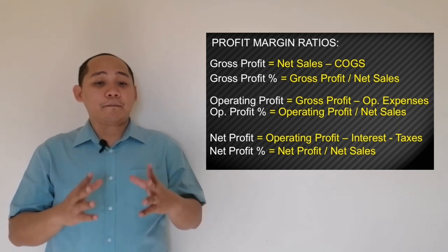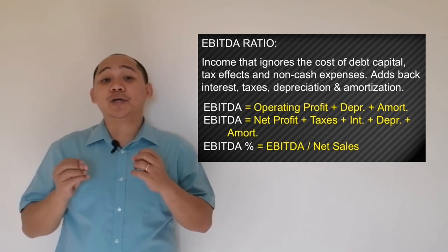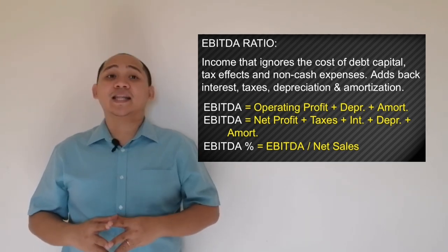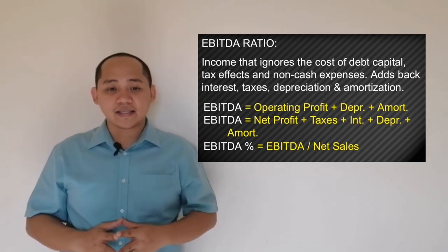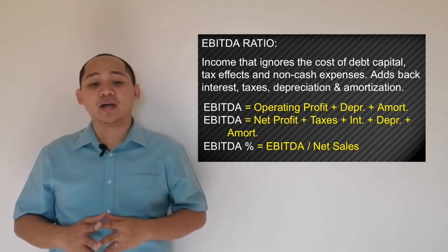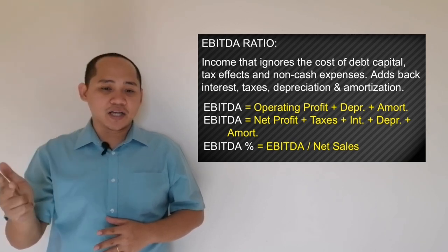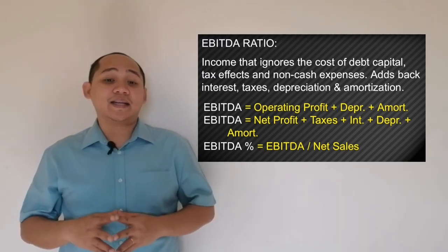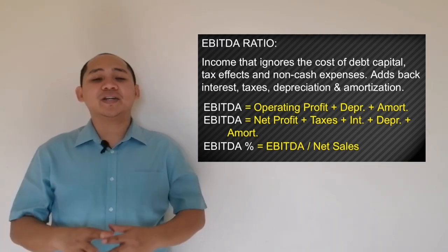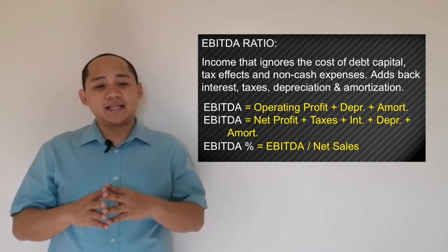Net profit margin measures the company's ability to generate earnings after taxes. For the EBITDA percentage ratio, you add back to earnings the interest, taxes, depreciation, and amortization — ignoring the cost of debt capital, tax effects, and non-cash operating expenses — then divide by net sales.